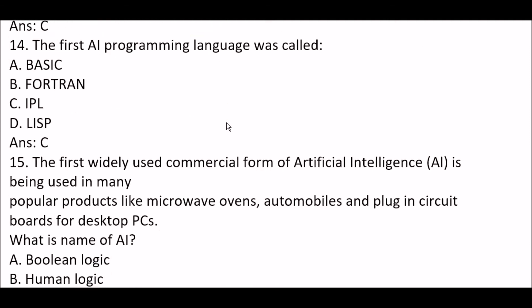Next question: the first AI programming language was called — Option A: BASIC. Option B: Fortran. Option C: IPL. Option D: Lisp. The right answer is Option C — IPL.